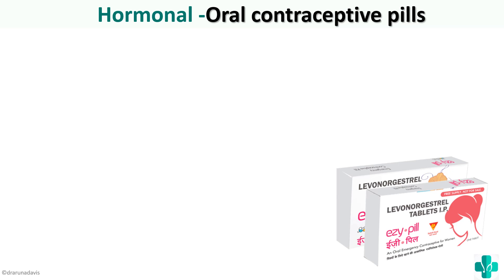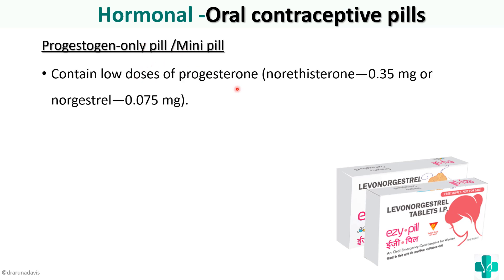The next type of pill is the progesterone-only pill, also called the mini pill. As the name suggests, it contains only progesterone. It contains low doses of progesterone — norethystron at around 0.35 mg or norgestrel at around 0.075 mg. Here is a picture of the Ezy pill, a type of mini pill promoted by the government of India.